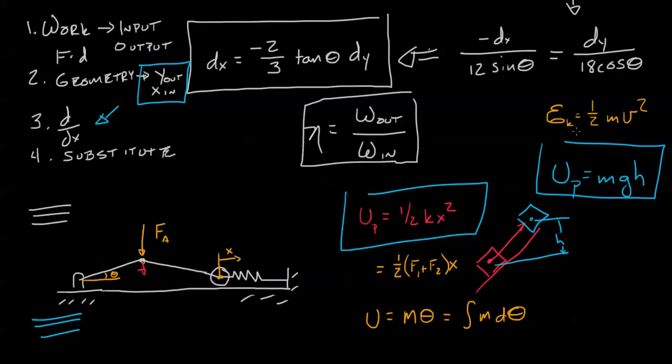Let's see, and finally, let's say rotational kinetic energy. Rotational kinetic energy is one half I omega squared.